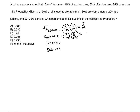So the percentage of all sophomores in the college that like probability is going to be 45 over 1000. Now let's do the same thing for juniors. There are 20% of all students in the college that are juniors, so it's going to be 20%, which is 1 over 5 — you can think of it as 2 over 10, which reduces to 1 over 5. Out of these juniors, 60% like probability, so that's 6 over 10 or 3 over 5.